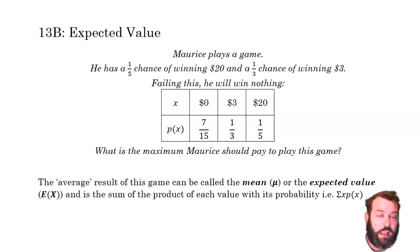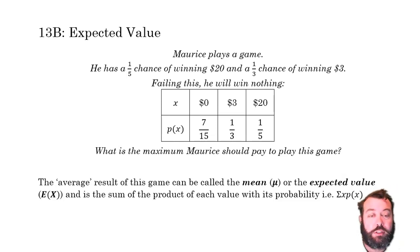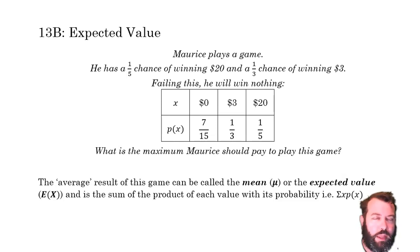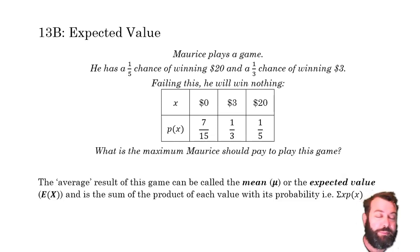This suggests that if Maurice played this game over and over again, he would typically win an average mean of $5 per game. So if it cost him $5 to play, in the long run he'd probably come out even. If it only cost him $4 to play, it would probably be a good idea — for his $4 outlay he can expect typically to get $5 back. If it cost him $6 to play, he could expect to lose money in the long run.